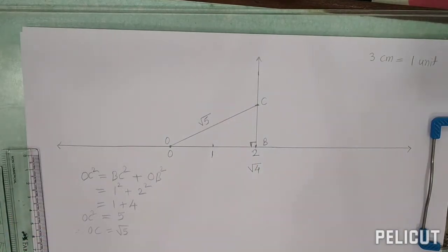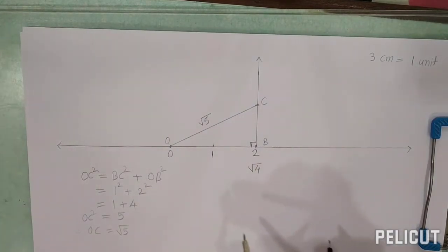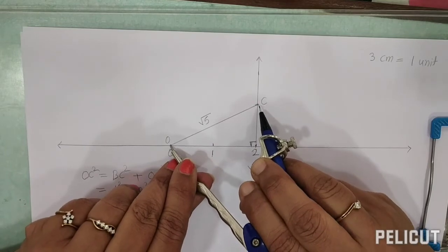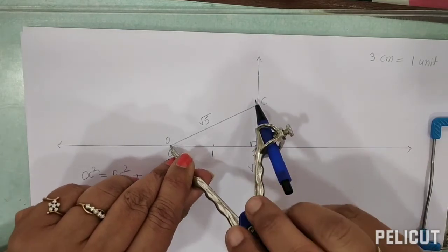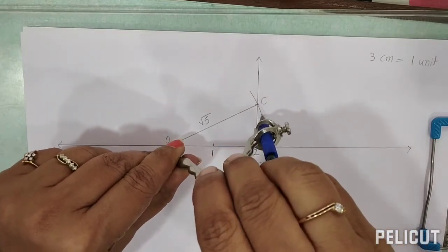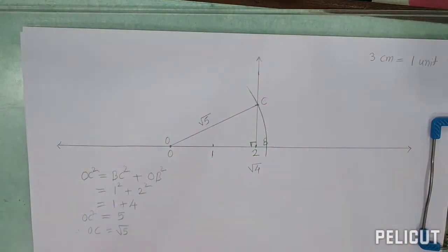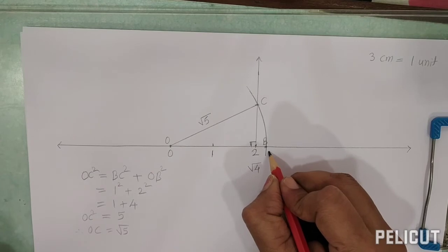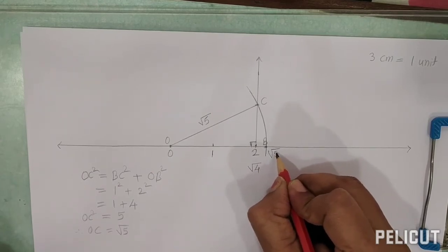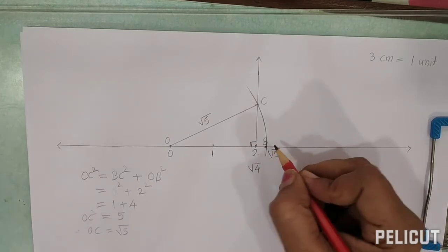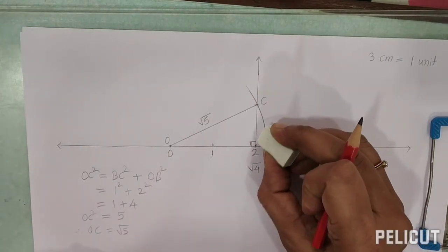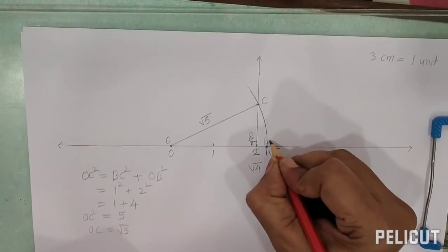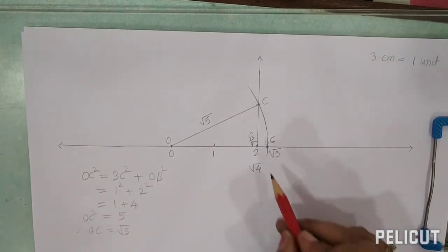Now take this distance in a compass, with O as center and OC as radius. Draw an arc which intersects the number line. The point of intersection is named C, and this point C represents √5 on the number line.